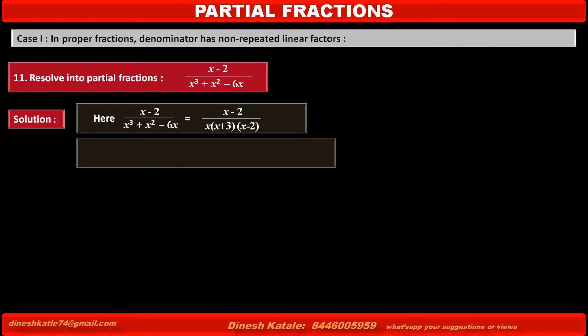By taking separate numerators A, B, and C for the three factors x, x plus 3, and x minus 2, our next step is: let the given fraction x minus 2 upon x(x plus 3)(x minus 2) be equal to A upon x plus B upon x plus 3 plus C upon x minus 2.